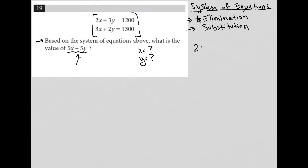I'm going to rewrite my system of equations: 2x plus 3y equals 1,200 and 3x plus 2y equals 1,300. The elimination method basically says to choose a variable that you want to get rid of.